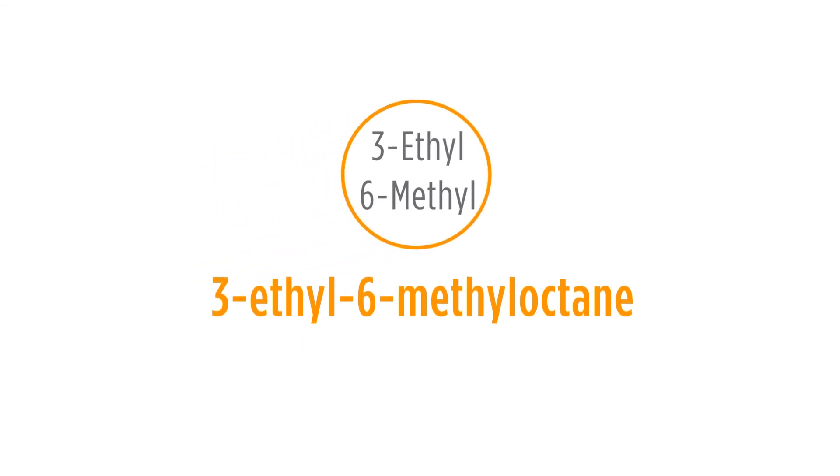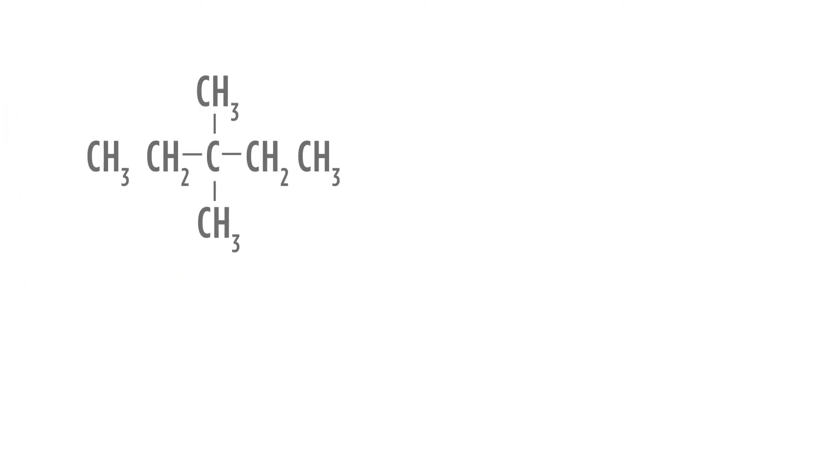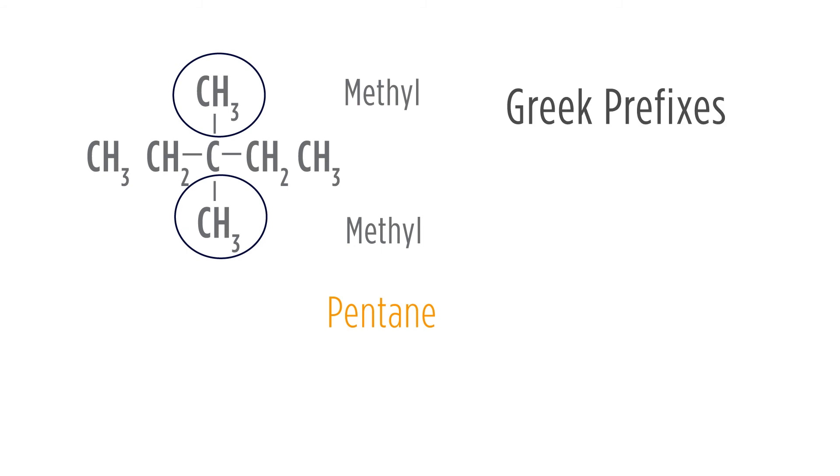There's one other thing that we need to consider. What if we have more than one of the same substituent? Let's look at one more example and see how this is named. Here we have 5 carbons, so that's going to be pentane. And we have 2 methyl groups. We will not call this 3-methyl, 3-methyl pentane. What we'll say is that we have 2 methyls. The way we indicate that we have 2 methyls is that we use the Greek prefixes: di for 2, tri for 3, tetra for 4, and so on. So therefore, the name for this one would be dimethyl pentane.